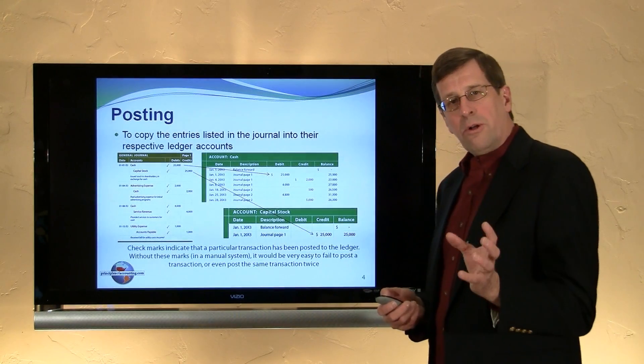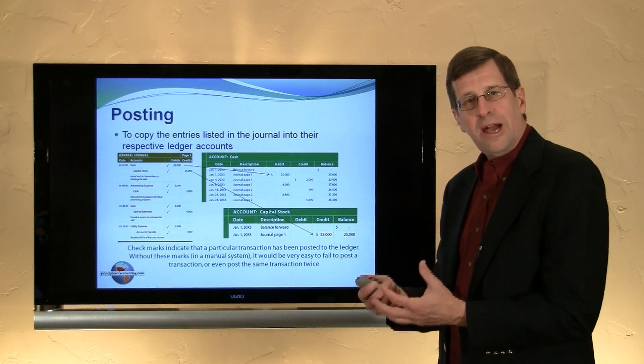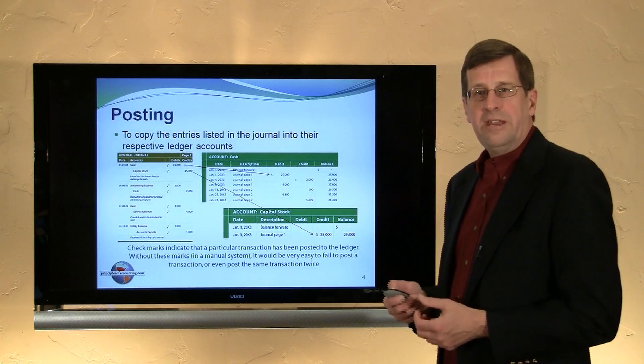So we have journals, the book of original entry, and then we have a subsequent set of records that are posted periodically, a general ledger. They are fundamentally different.